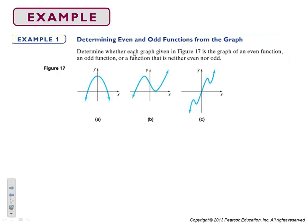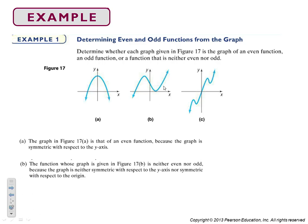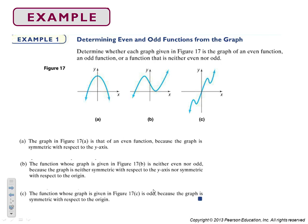Looking at these graphs, we determine whether they are even, odd, or neither. The first one is symmetric with respect to the y-axis, so it's even. The second doesn't have symmetry with respect to the origin — it doesn't have the same coordinates in the diagonal planes — so this is neither. The third one looks like origin symmetry, so it's odd.